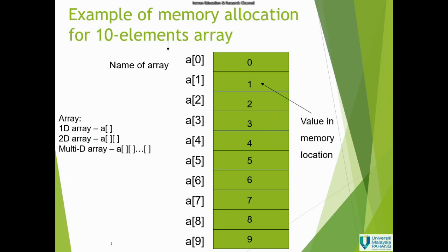For example, we have an array defined with indices from 0 to 9. When we define the array, the value in the bracket is the size — in this case the size is 10 because indexing starts from 0 to 9. In C and C++, the array index starts from 0 by default.